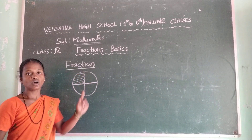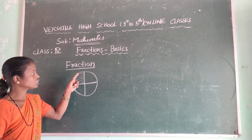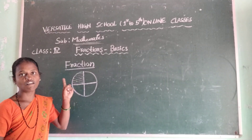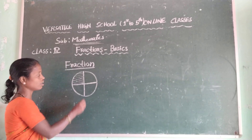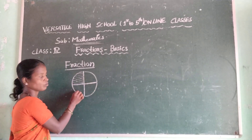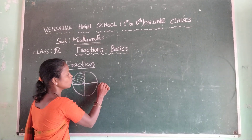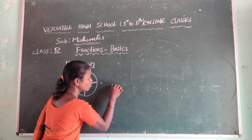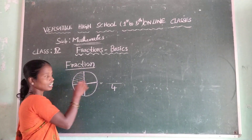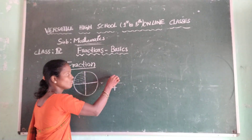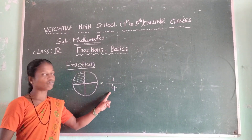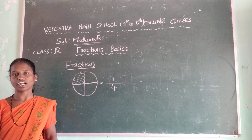So in this total part, I am shading one part. How many parts are shaded here? One. And total parts are one, two, three, four — so total parts are four. And how many parts are shaded? One part. So here, one by four is called a fraction.